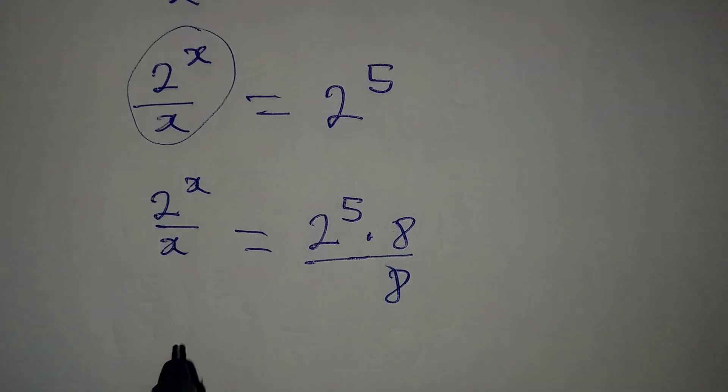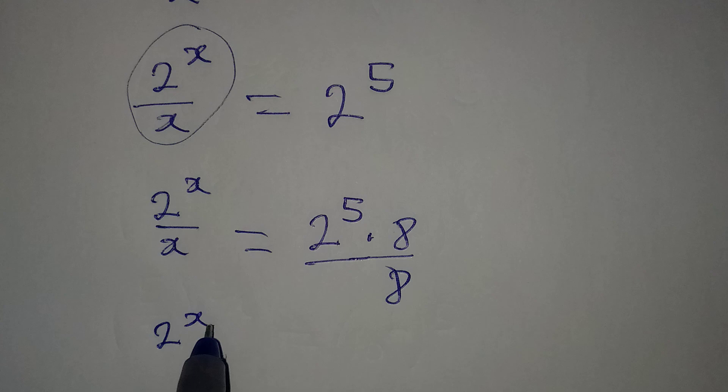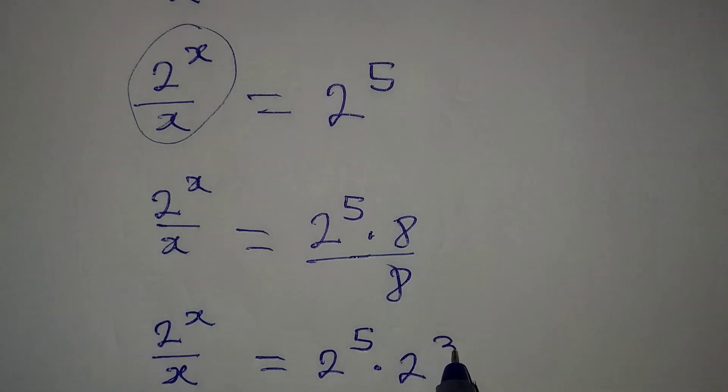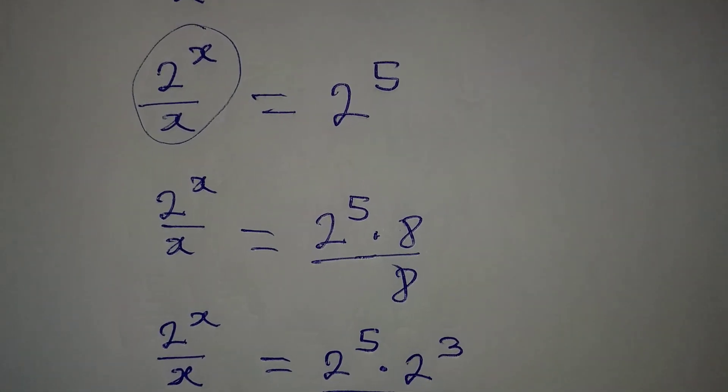Now, go back to this. 2 to the power of x over x is equal to 2 to the power of 5, multiply by 2 to the power of 3, and this will be over 8.